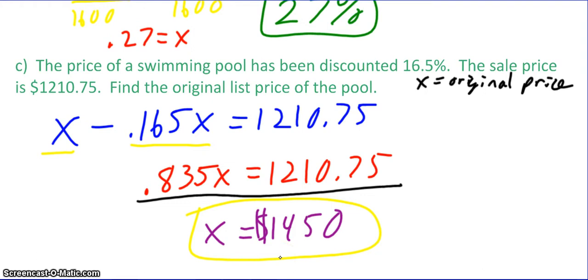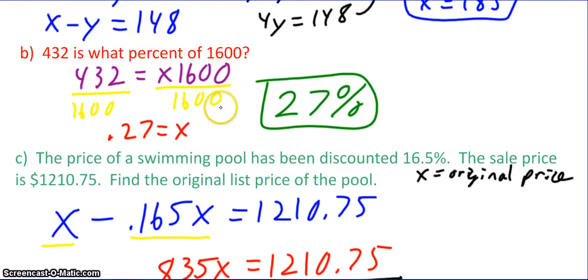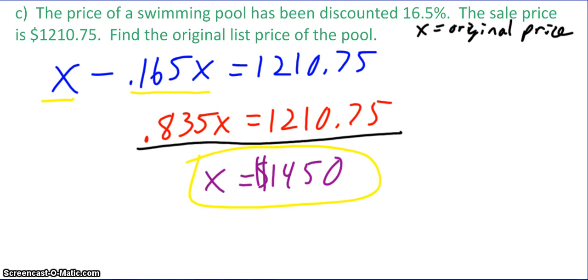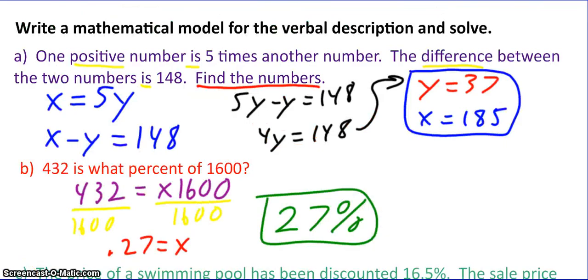Now here you want to double check. Does my answer make sense? And this goes for B and A as well. Make sure your answer makes sense. So if the sale price of the pool is $1210.75, then the original price should be more than that. But it shouldn't be a lot more than that because it was only discounted 16.5%. So to go from 1450 to 1210.75, that sounds about 16.5%. Same with up here. You should be able to do a pretty good approximation that 400 is going to be 25%. So 432, 27%. That makes sense. But whenever you're doing these problems, you always want to make sure your answer makes sense. And make sure you take your time in writing out the equation when you're doing the modeling because, again, if you mess up the equation, it doesn't matter how well you are at solving the algebra, you're going to get the wrong answer.